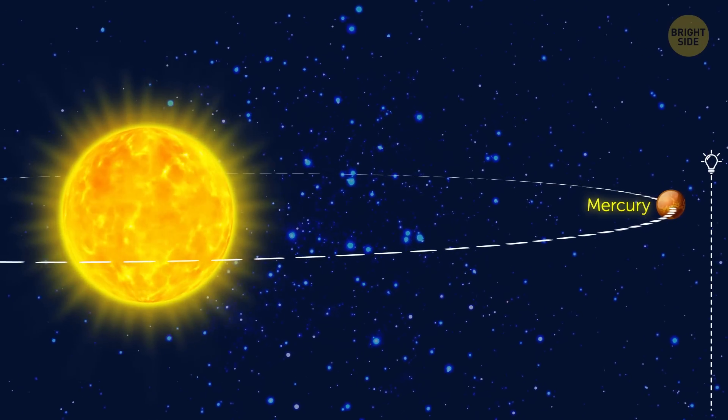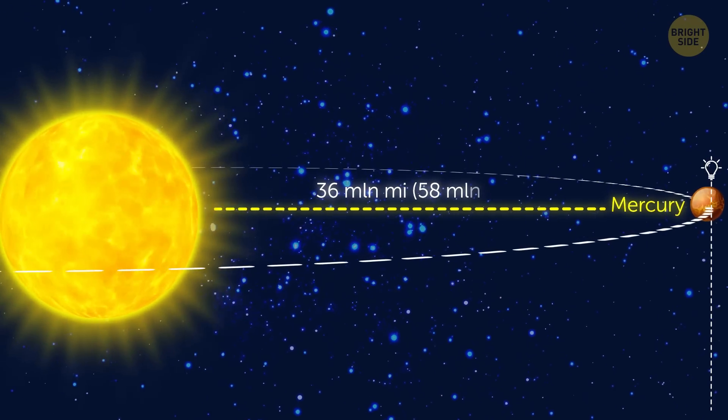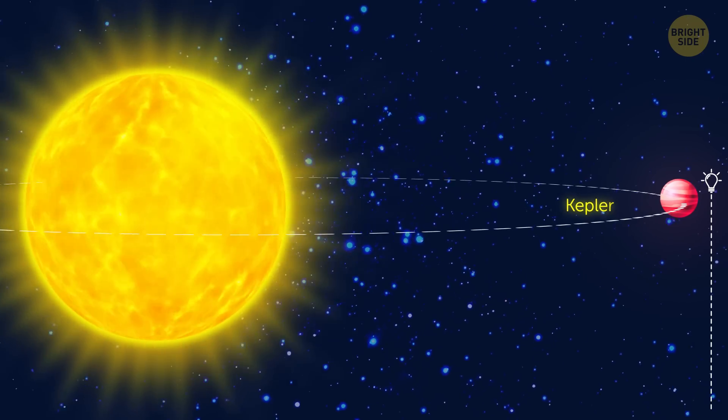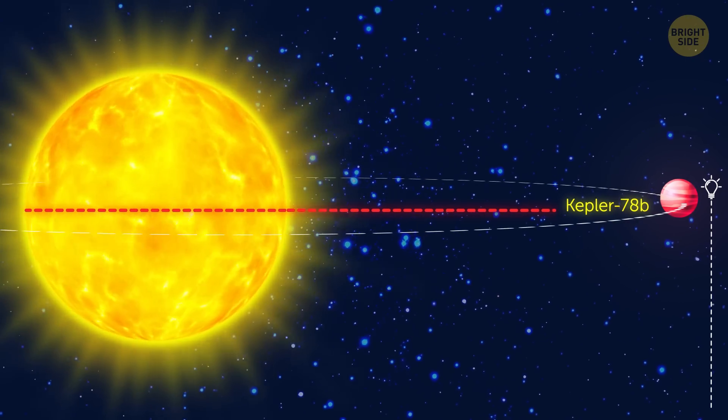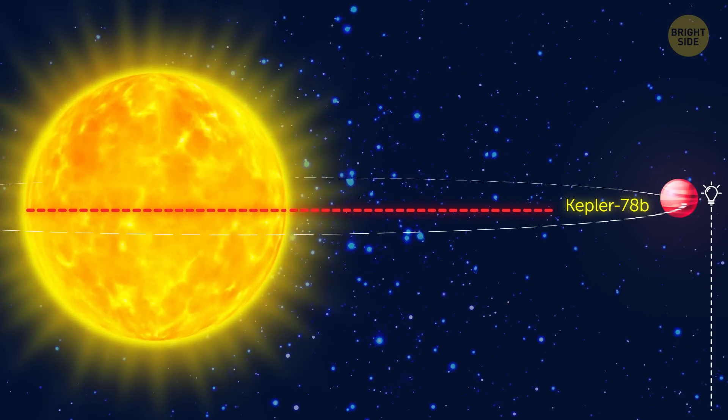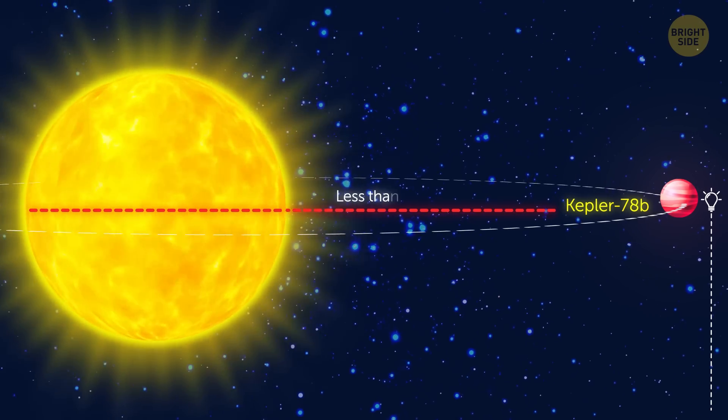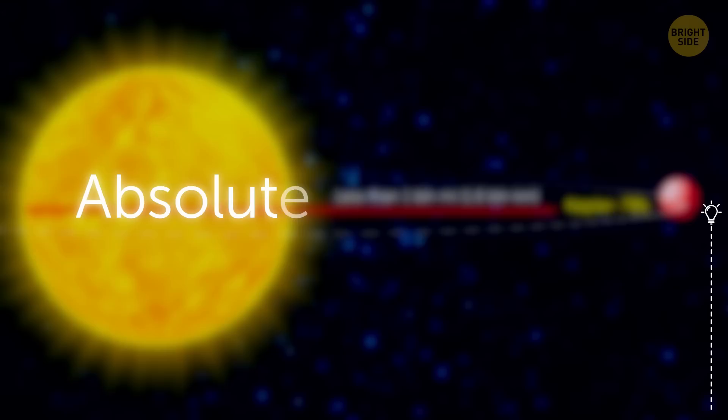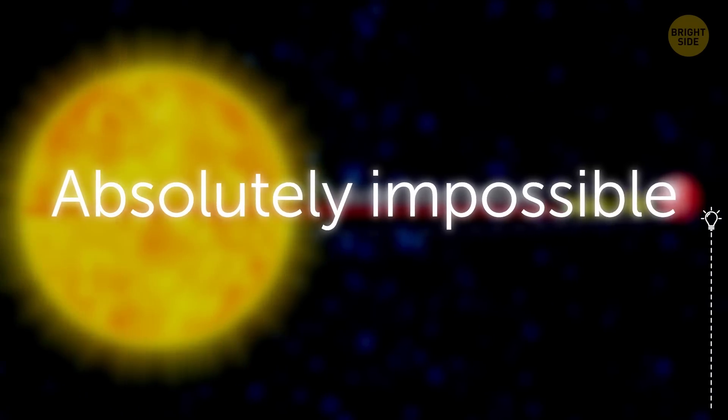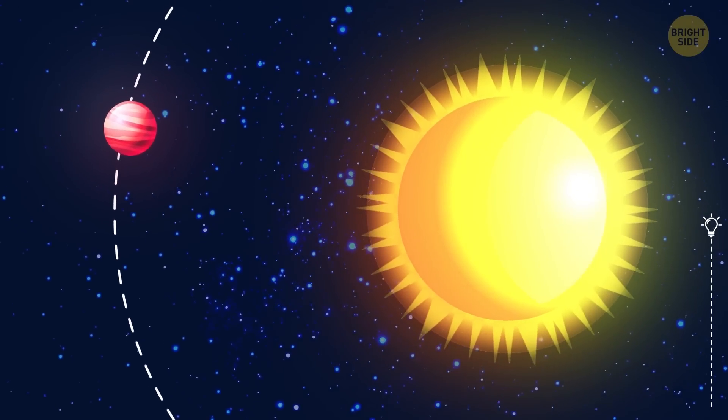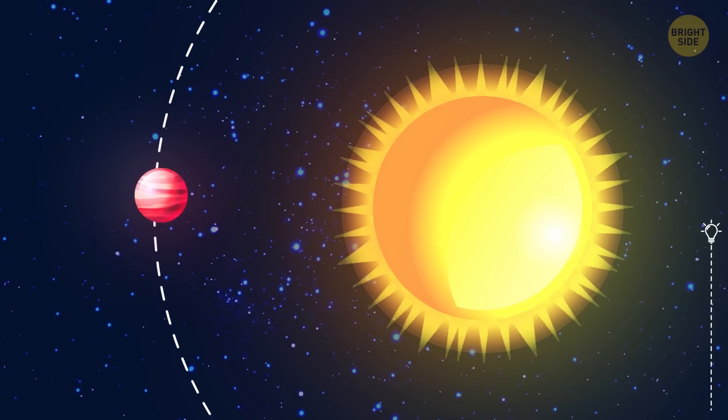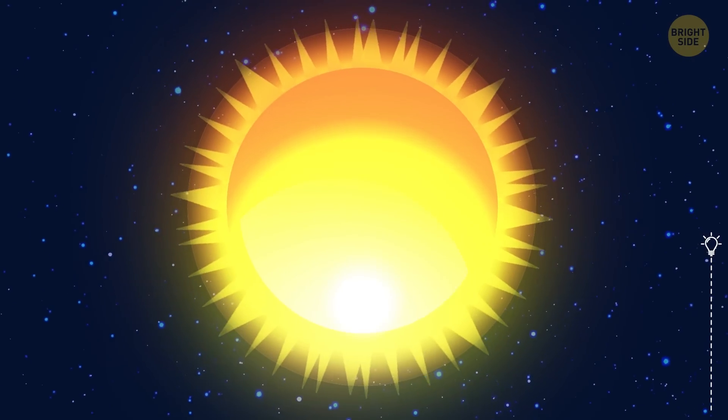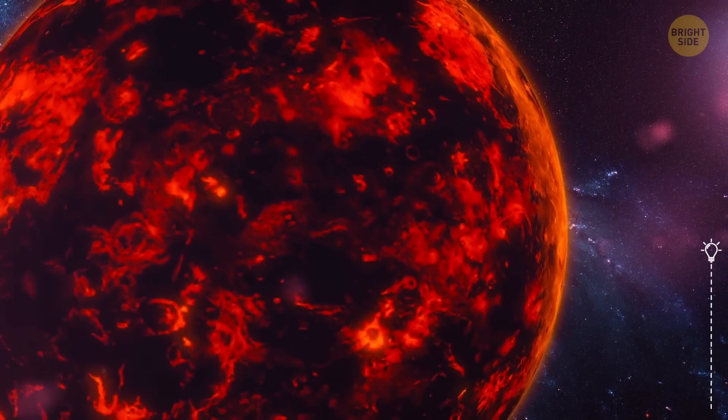The closest planet to our Sun, Mercury, is about 36 million miles from it. Kepler-78b orbits its star at a distance of less than 1.5 times the diameter of the star itself. That's less than 1 billion miles from the surface of the star. And as far as we know, it's absolutely impossible. Kepler-78b is constantly getting closer and closer to the star it orbits. And one day, it'll be swallowed by it. But for now, the planet stands firm.